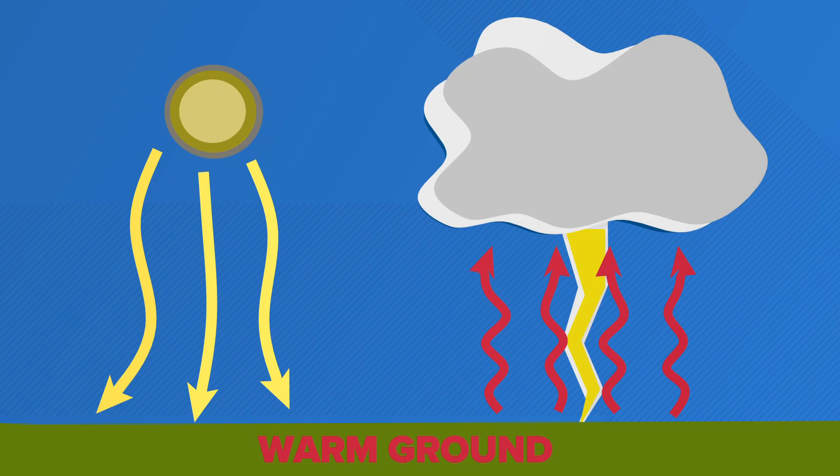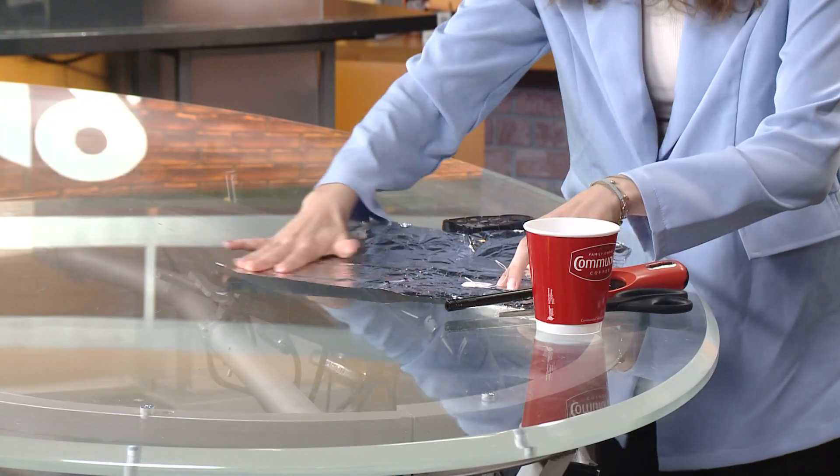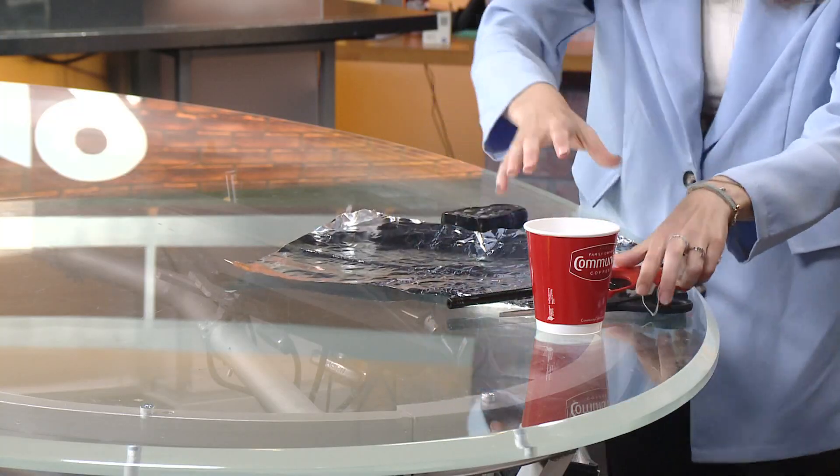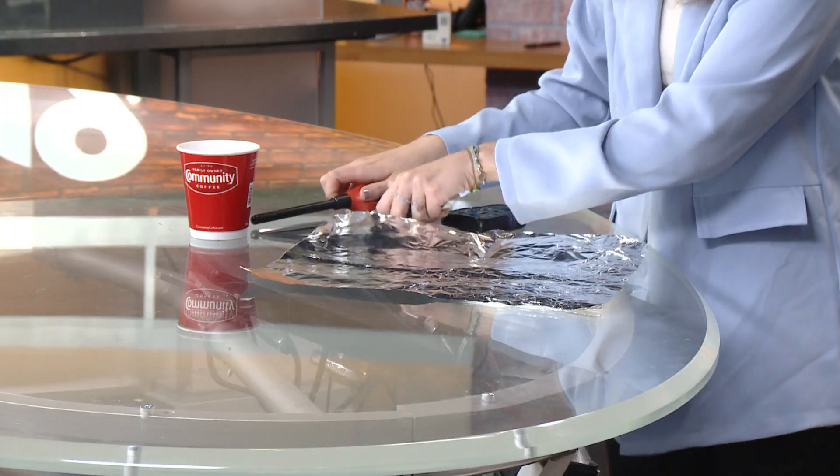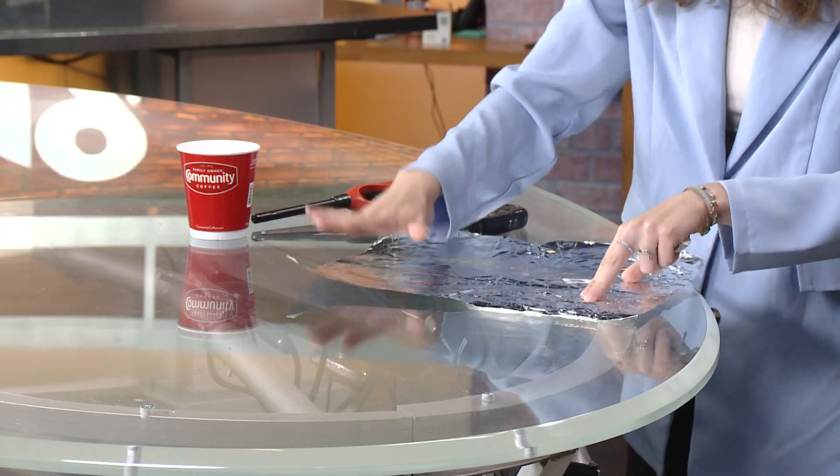Now we have a cool experiment for you that you can do with the kiddos. You need quite a few things for it. You need something that is going to be safe if fire touches it — I recommend tinfoil or a baking pan. You will also need a tea bag, a lighter or a match, and I would recommend some scissors. Of course, make sure that you have adult supervision if you have kiddos around. So what you're going to do is make sure that you have your tinfoil or baking pan set up nicely and try to make it as flat as you can, because we need this to be a solid base.